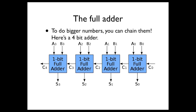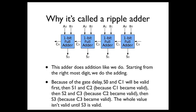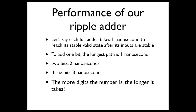You can chain these full adders to make bigger adders. Here's a four-bit adder built from one-bit adders — the carry-out of one becomes the carry-in to the next. As you chain them, the carry path is the longest path. One bit takes one nanosecond, two bits two nanoseconds, three bits three nanoseconds — you can see how we're increasing the longest path with each additional bit.